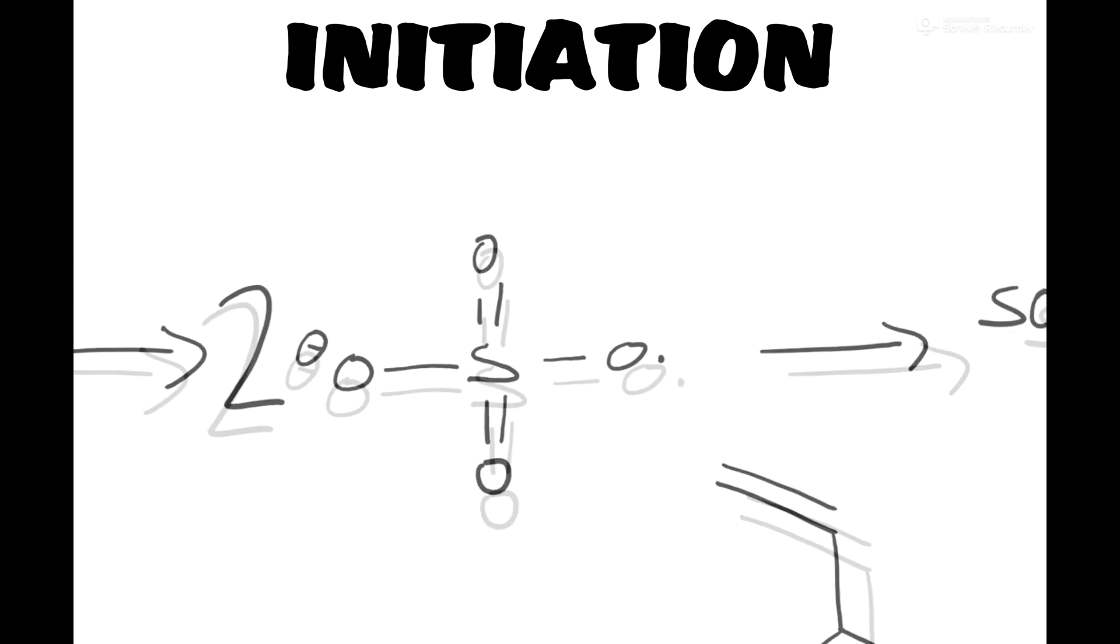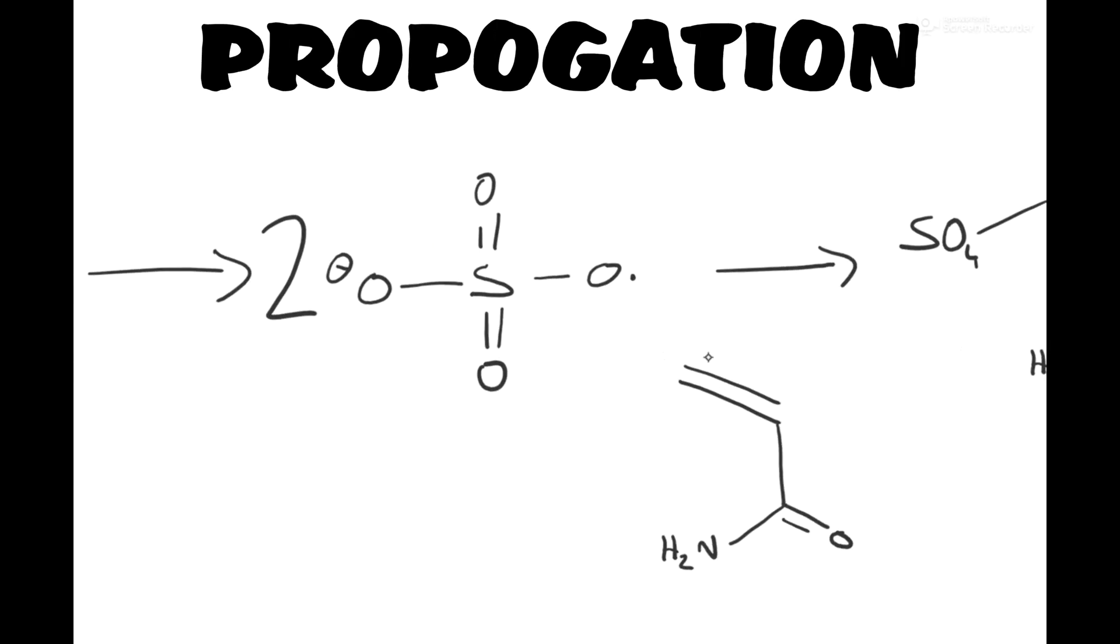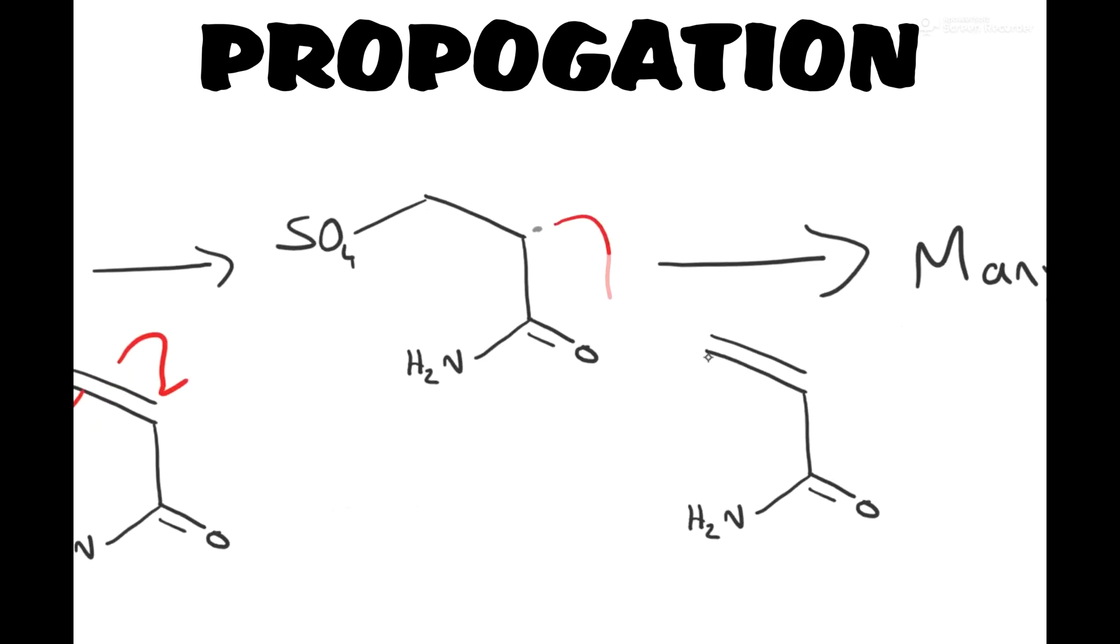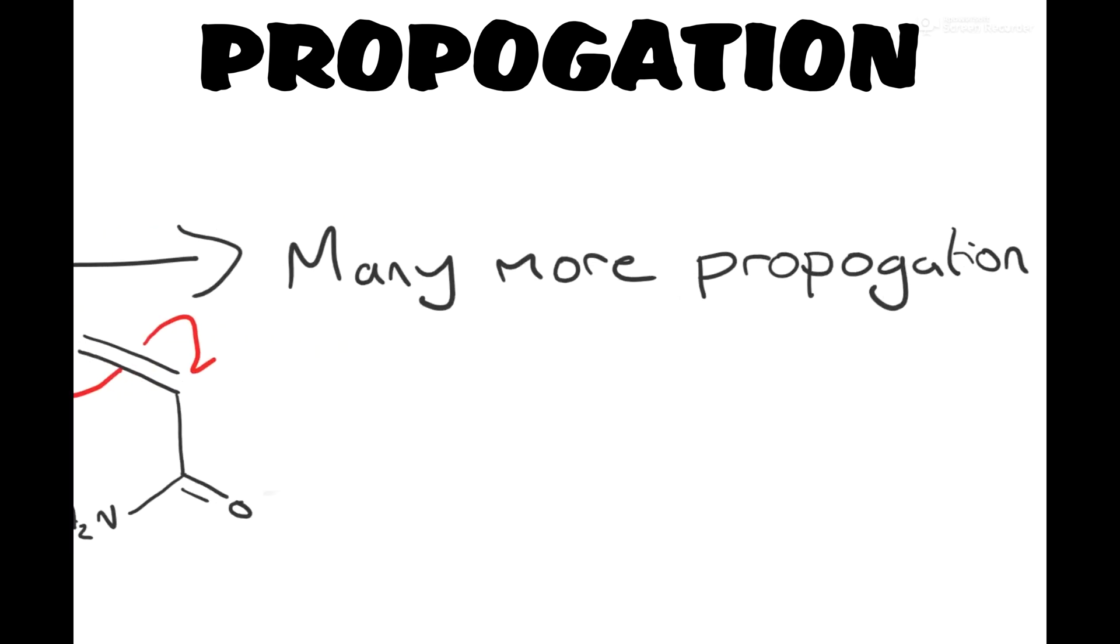In which the oxygen-oxygen bond in persulfate is broken homolytically, forming two radical species. These go on to react with the alkene groups in acrylamide to form a radical carbon atom, which continues to react with more monomers in a series of propagation steps to form a long chain.